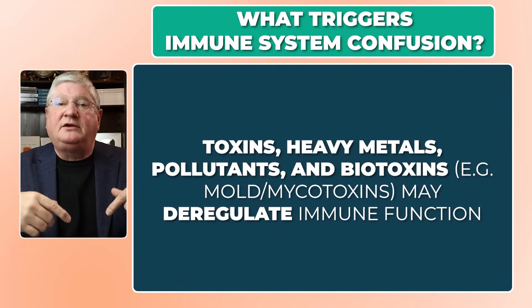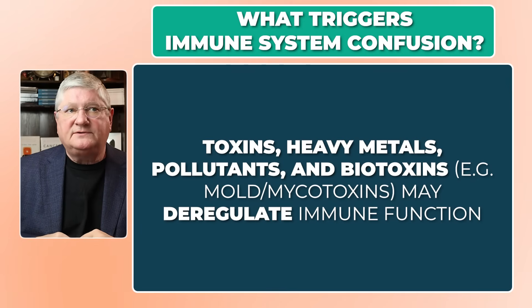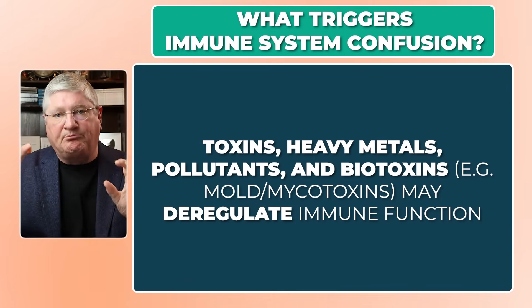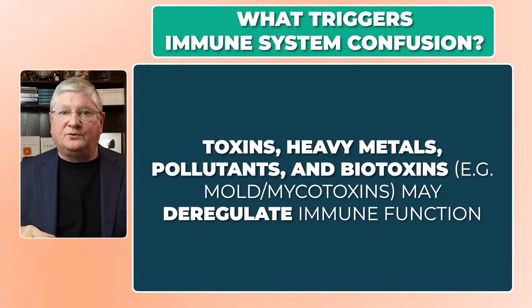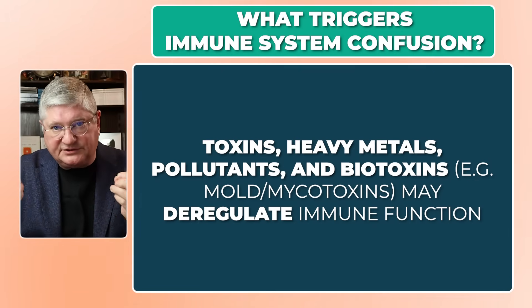What else could deregulate the immune system? These factors could become epigenetic triggers or just deregulate the immune system on their own — including toxins and toxicants. Heavy metals can do this. Some chemicals, especially persistent organic pollutants, can do this. Also, what we call biotoxins can do this — for example, mycotoxins from mold. Most mycotoxins very heavily disorder our immune system. They may not directly cause autoimmunity, but if we've already got a weakness heading in that direction, mycotoxin exposure may push us over the edge.